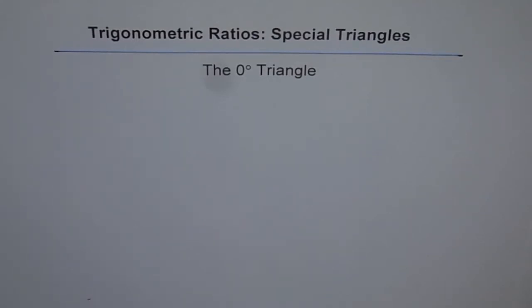Trigonometric ratios for special triangles. These special triangles are the ones which have angles like 30 degrees, 45 degrees, 60 degrees, 0 degrees and 90 degrees.